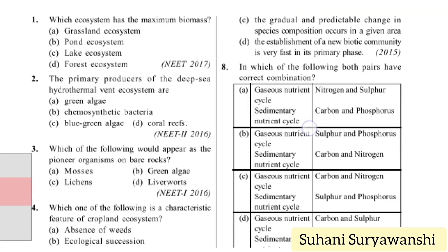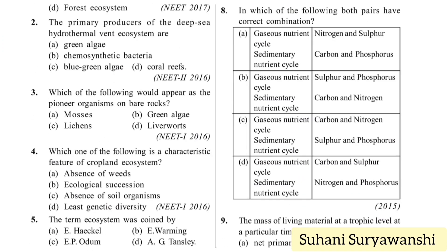In which of the following do both pairs have the correct combination of nutrient cycles? The correct pairing is: gaseous nutrient cycle — carbon and nitrogen; sedimentary nutrient cycle — sulfur and phosphorus. This is option C, which is correct.